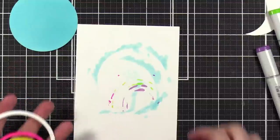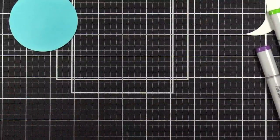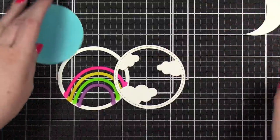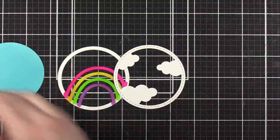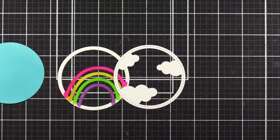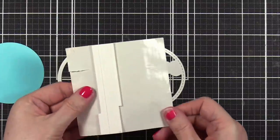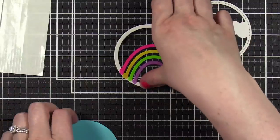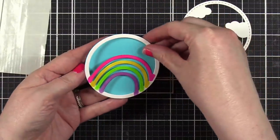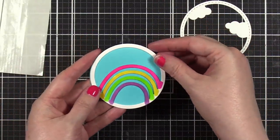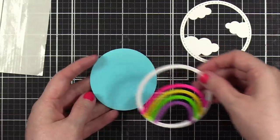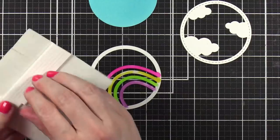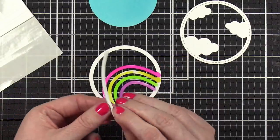Now we can assemble our little rainbow thingy. I have some foam adhesive here—these are very narrow strips from Darice. So let's see, this is gonna go right on top of that, so I'm going to put some foam adhesive on the back of my rainbow piece.